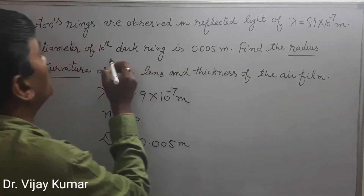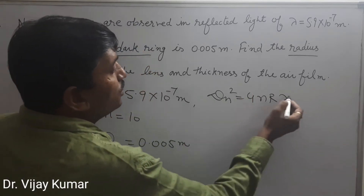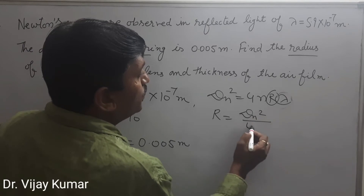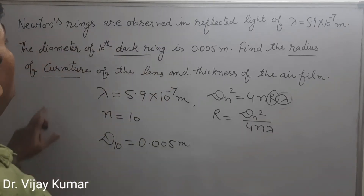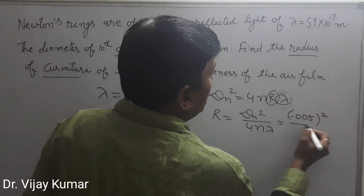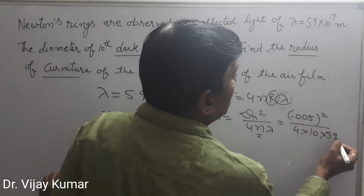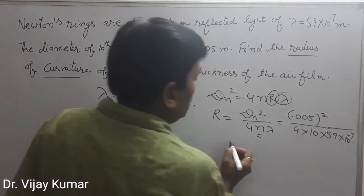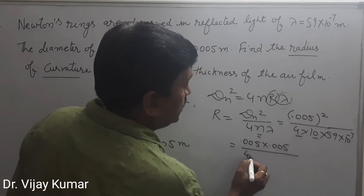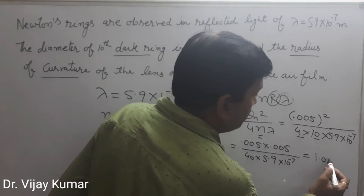For a dark ring, we know that dn² = 4nRλ. We have to determine the radius of curvature R, so R = dn² / (4nλ). The diameter of the 10th dark ring is 0.005 m, n = 10, and λ = 5.9 × 10⁻⁷ m. So R = (0.005)² / (4 × 10 × 5.9 × 10⁻⁷).